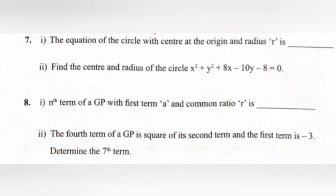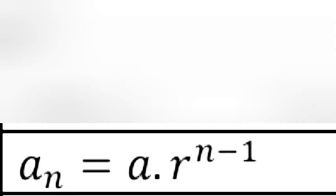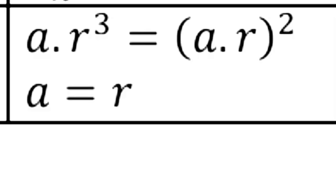Problem 8, part i: The nth term of a GP with first term a and common ratio r is blank. Part ii: The fourth term of a GP is the square of its second term and the first term is -3. Determine the seventh term. Answer to part i: an = a × r^(n-1).